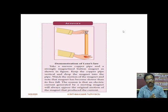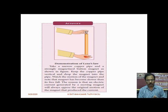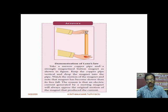Here is a small demonstration activity for Lenz's Law: Take a narrow copper pipe and a strongly magnetized button magnet. Keep the copper pipe vertical and drop the magnet into the pipe. Watch the motion of the magnet and note that the magnet falls slower than expected. The reason is that an electric current generated by the moving magnet will always oppose the original motion of the magnet that produces the current.